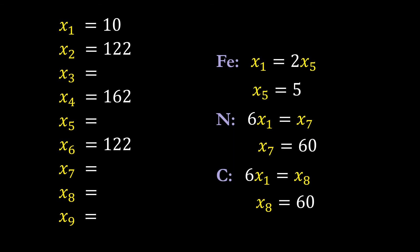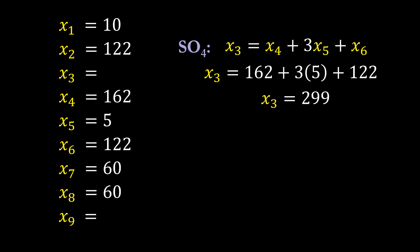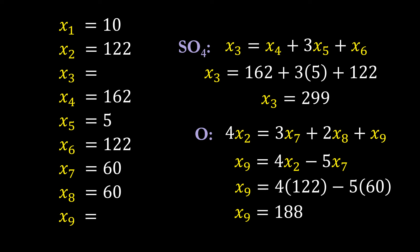X1 is equal to three different variables. So what we can do is we can figure out X5, X7, and X8 and insert those into our list. Here we can use the SO4 equation to determine what X3 is. And this is the largest coefficient. It's 299. And then we can use the oxygen equation to figure out that X9 is 188. So we can insert all of those into our list, and we have all nine coefficients at this point.